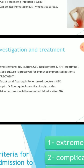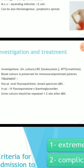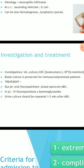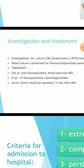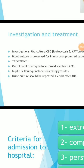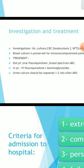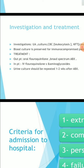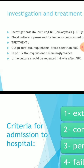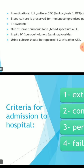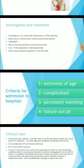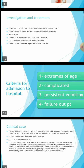Treatment: outpatient with oral broad spectrum antibiotics for mild-to-moderate cases; inpatient IV antibiotics for severe or immunocompromised patients. Urine culture should be repeated two weeks after completing the antibiotic course. Criteria for hospital admission include extremes of age, complicated UTI, persistent vomiting, and failure of outpatient therapy.